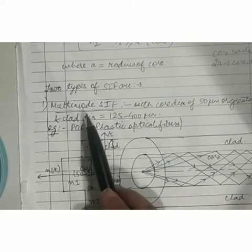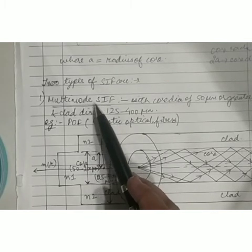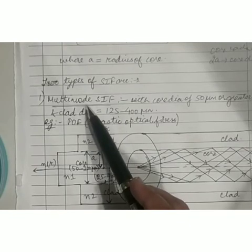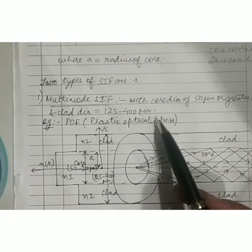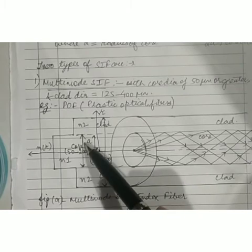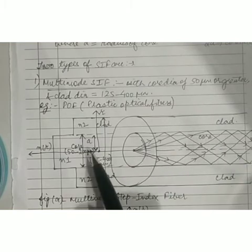The step index fiber can be of two types. One is the multimode step index fiber — it is a step index fiber capable of transmitting multiple modes. The core diameter can be 50 micrometers or more, sometimes up to 200 micrometers — so core diameter can be in the range of 50 to 200 micrometers. The cladding diameter can be between 125 to 400 micrometers. Plastic optical fiber (POF) belongs to this category of multimode step index fiber. This diagram shows the refractive index profile and ray transmission of multiple optical signals traveling inside multimode step index fiber.